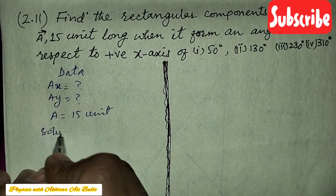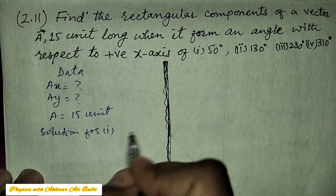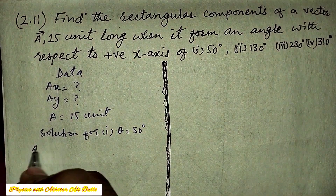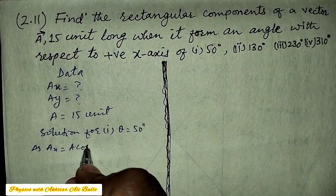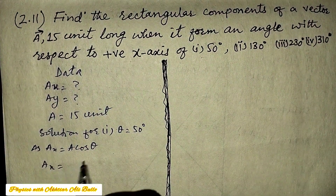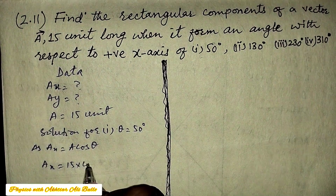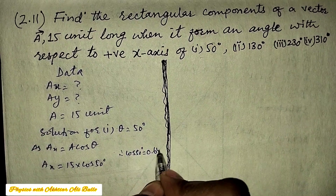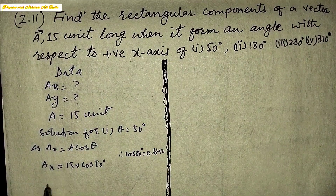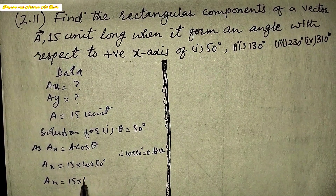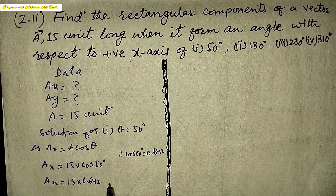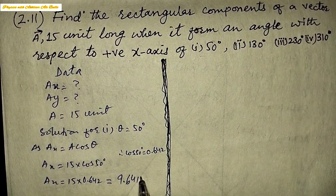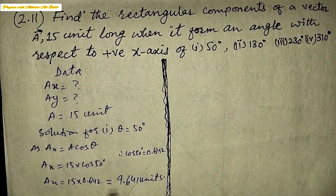Solution for (1): when theta is equal to 50 degrees. As we know, Ax is equal to A cos theta, so Ax will be equal to 15 into cos 50°. The value of cos 50° is 0.642, so Ax will be equal to 15 into 0.642, giving us 9.641 units.